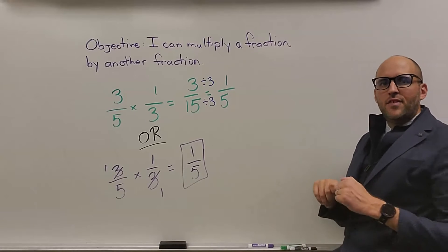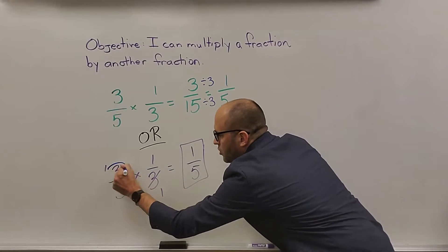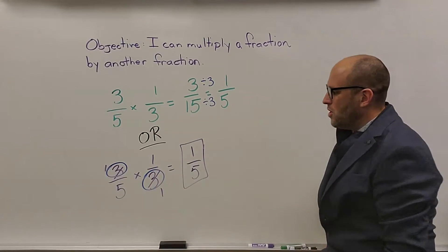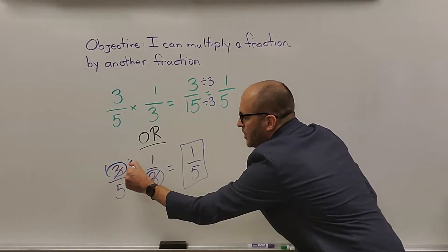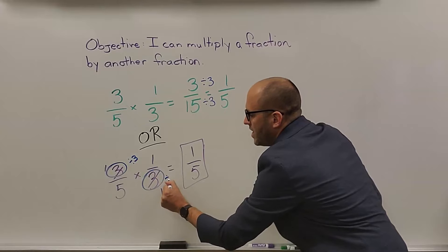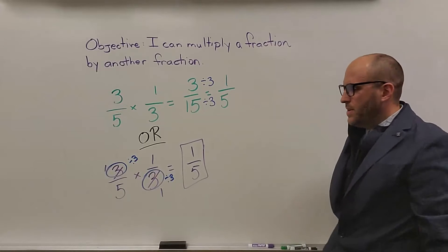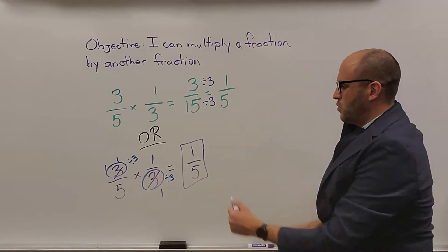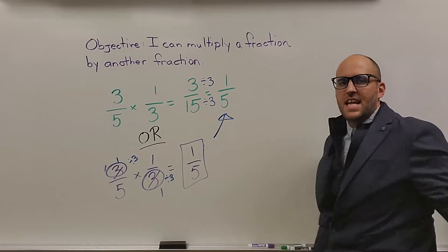And if you can divide something into the numerator and denominator, you can do that beforehand. So, 3 can go into 3 here, and go into 3 there, which means I end up with 1 times 1 and 5 times 1, and it still gets us the same answer.